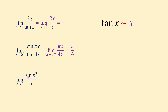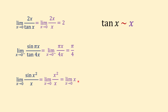The last example: the limit of sine of x squared over x when x approaches 0. If we replace sine of x squared with x squared, our limit becomes the limit of x squared over x. x squared over x equals x, so we have the limit of x when x approaches 0. Plugging in 0 for x, the value of the limit is 0.